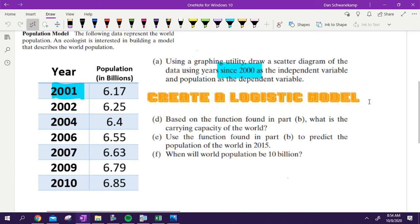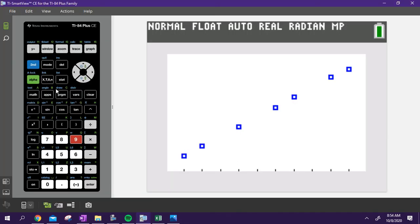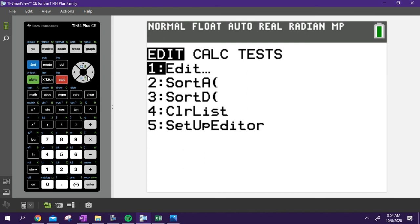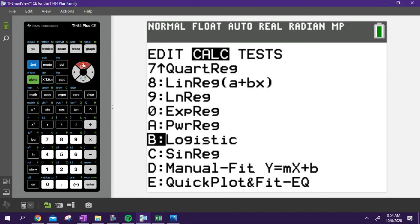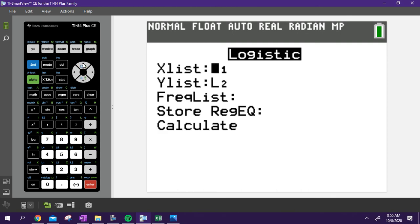Based on that, we're creating a logistic model. So let's create a logistic model. Stat, over to Calculate, and then scroll to letter B, which is Logistic. I hit Enter on that thing, I go down to Store Regression Equation, Alpha F4, store that thing as Y1.